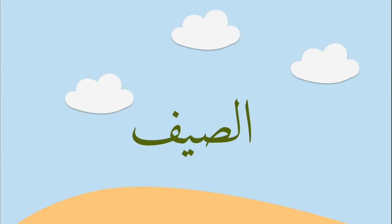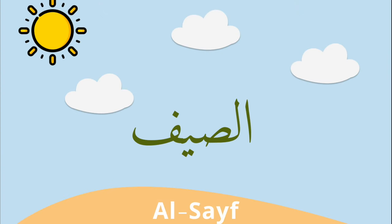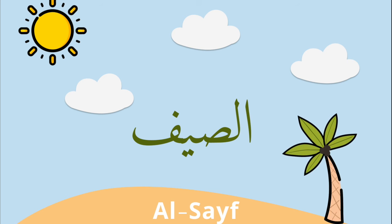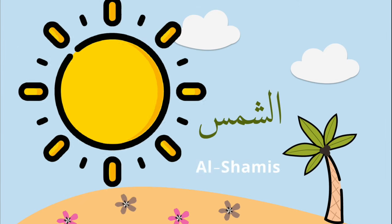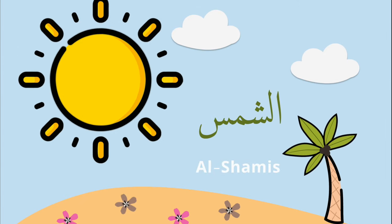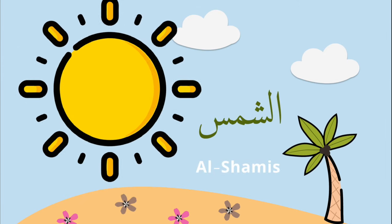Summer is الصيف. الصيف. الشمس بيطلع بالصيف — The sun comes out in the summer. شمس means sun.